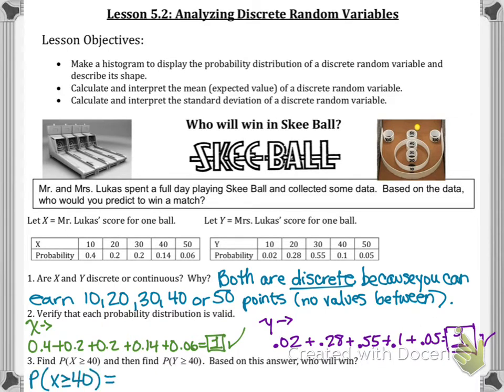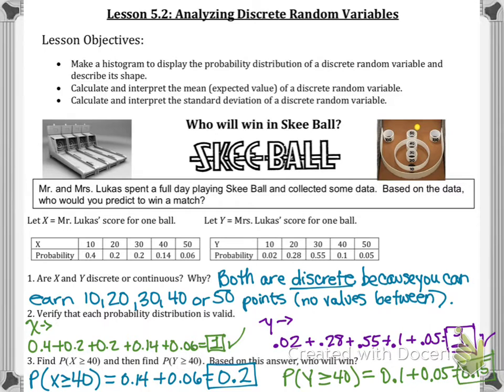Finally, we want to find the probability that X is at least 40. So what's the probability that Mr. Lucas scores at least 40 points? Because there's the equal to symbol, we would include 40 and 50 here. So we'll include both 14% and 6% to be 20% chance that he earns a 40 or higher. From Mrs. Lucas, same thing. What's the probability she earns a 40 or more? And she is a little bit lower here at 10% and 5% being 15%. So if you're only basing it on getting the highest possible scores, it might be that Mr. Lucas could win here.